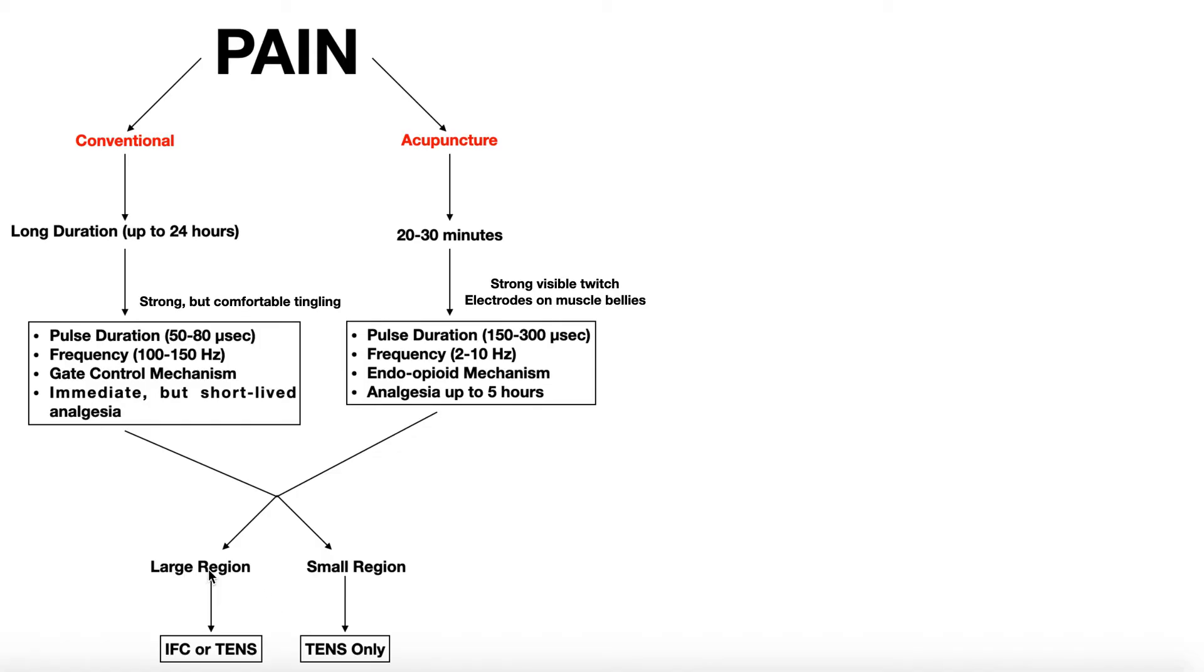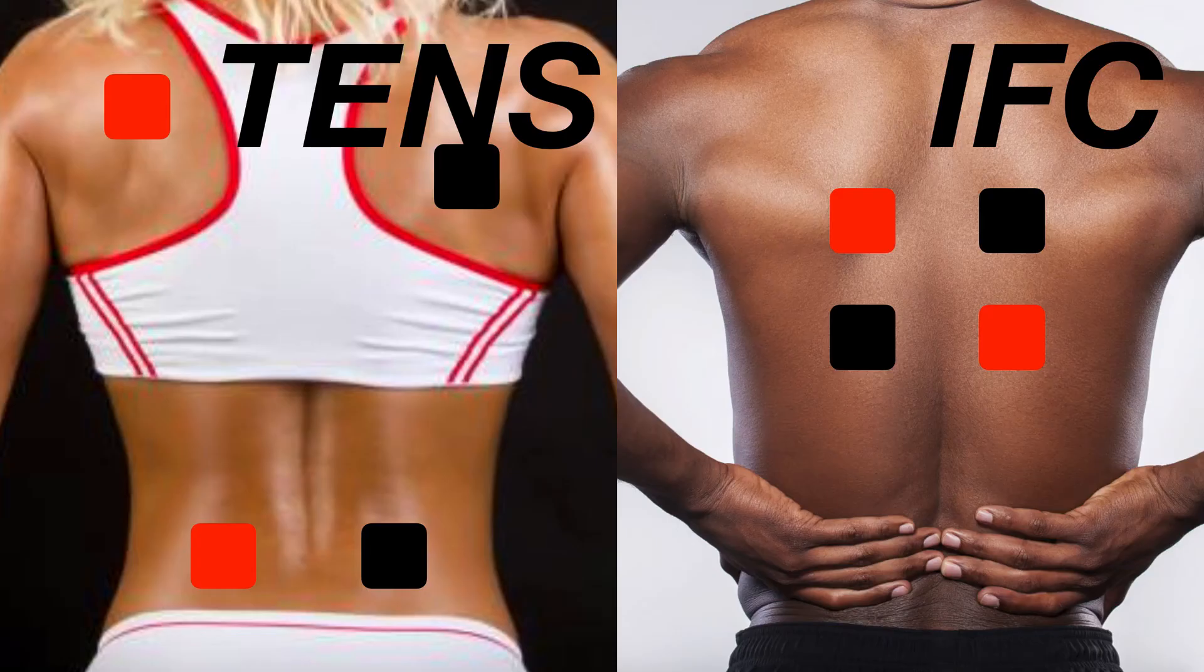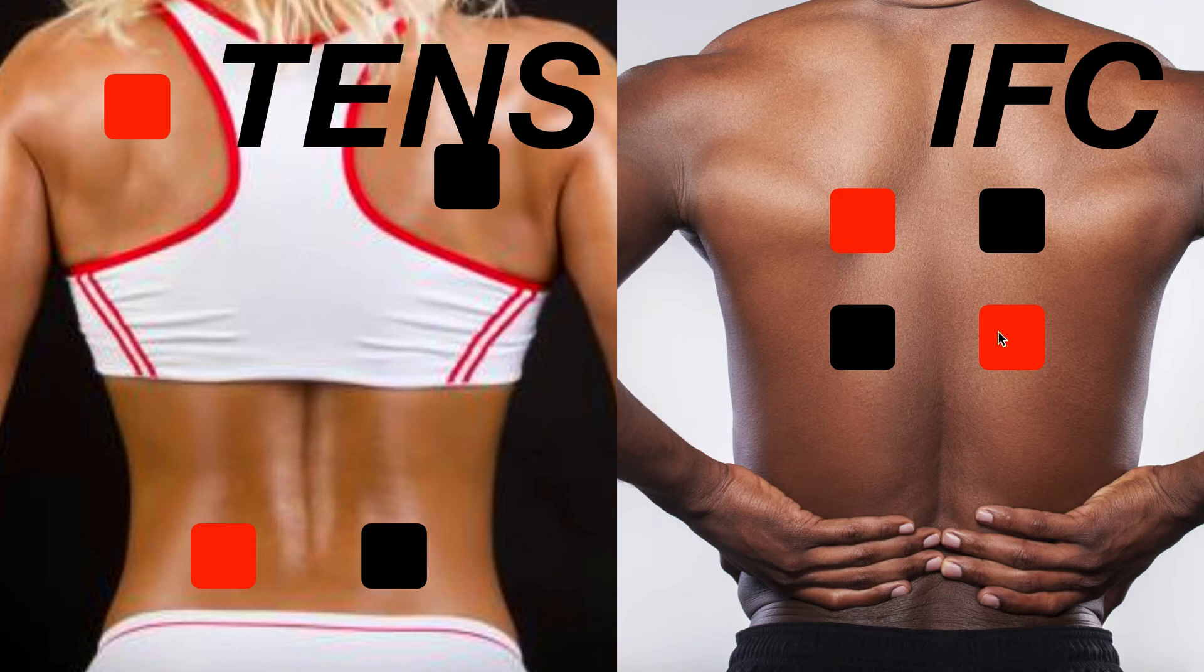For a large region of the body, like we have anywhere on the back really, you can use TENS or IFC. But if you have a small region of the body, it's better to use TENS. And the question is, why? Well, remember with IFC, you have to use all four electrodes and they have to be crisscrossed like this. What if you have a situation where a person had an ankle sprain?